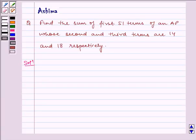Hello and welcome to the session. Let us understand the following question today. Find the sum of first 51 terms of an AP whose second and third terms are 14 and 18 respectively.